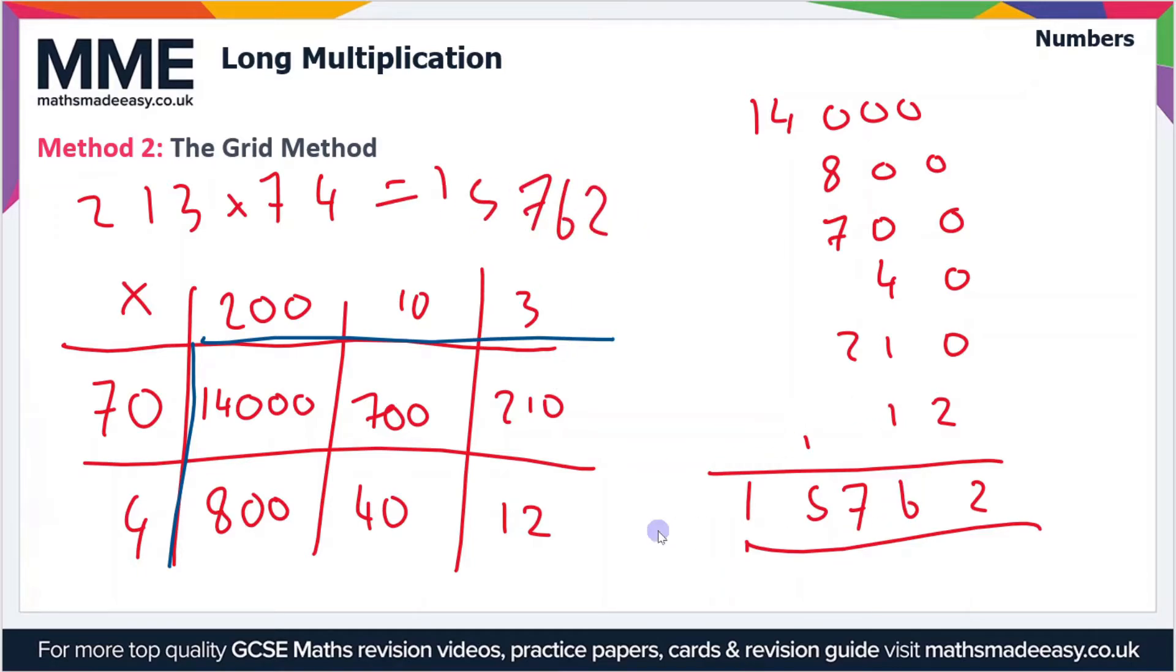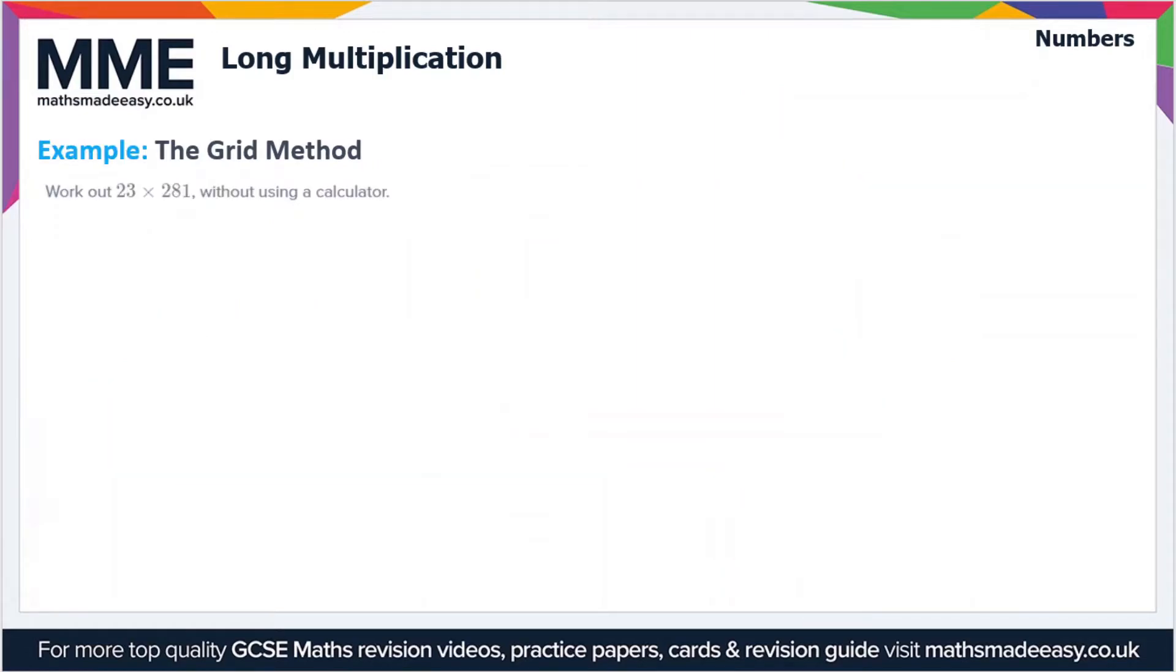That is the grid method for long multiplication. Now let's move on to look at another example. This is the second example: we've got 23 times 281. We'll do the same thing here.